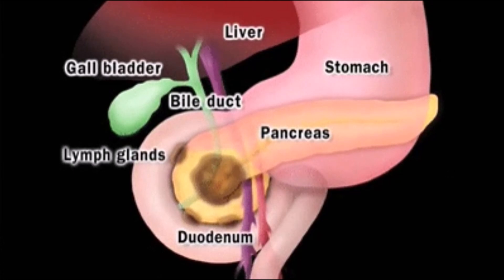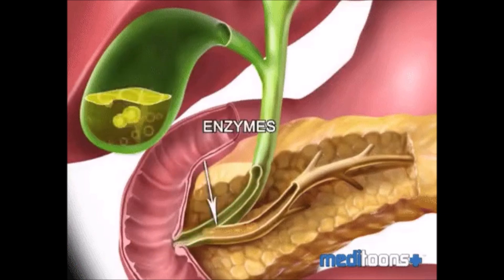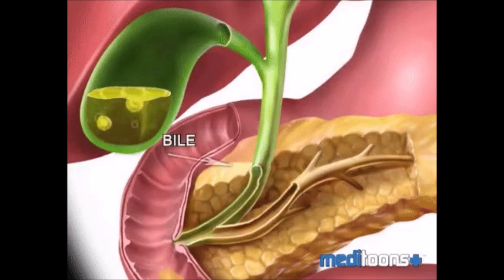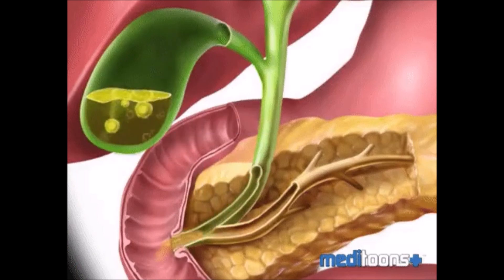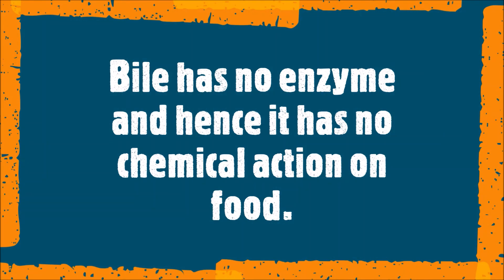The liver is the largest gland in our body, with an attached soft pear-shaped sac called the gallbladder. The liver secretes bile juice, which is alkaline and contains bile pigments called bilirubin and biliverdin, stored temporarily in the gallbladder. The functions of bile: it breaks larger globules of fat into smaller globules to allow enzymes to act on and digest them, prevents putrefaction of food, and neutralizes the acidity of food to create a suitable medium for pancreatic juice to act. Bile has no enzymes and hence no direct chemical action on food.